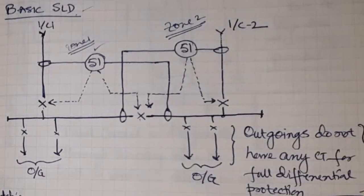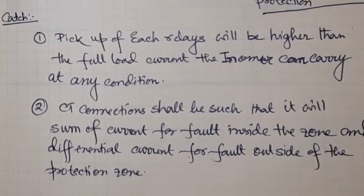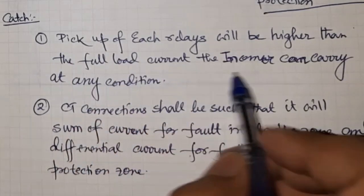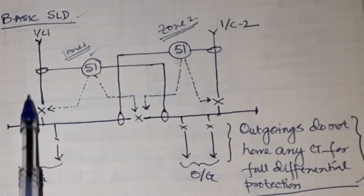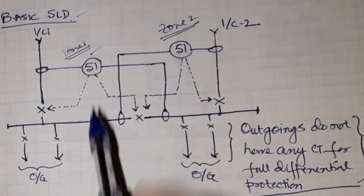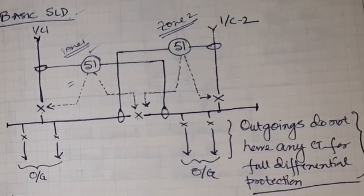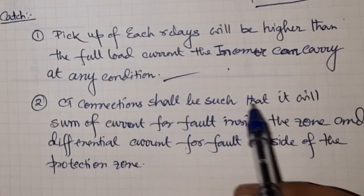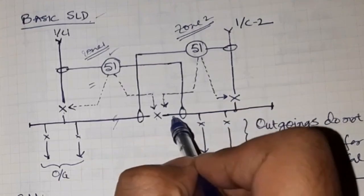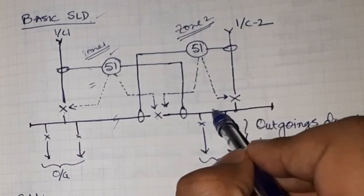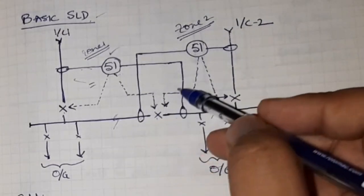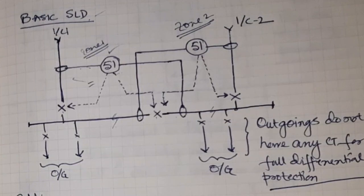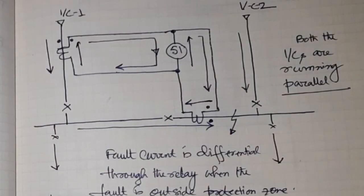There are two key catch points. Number one: the pickup of each relay shall be higher than the full load current the incomer can carry under any condition — whether the incomers are running in parallel or one incomer is carrying the full bus load. Number two: the CT connection shall be such that it gives a summation of current for a fault inside the zone. If there is any fault outside the zone, the two CTs will give a differential current, and for a fault inside the zone, the two CTs will give a summation of current.